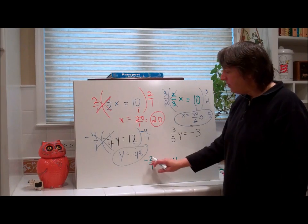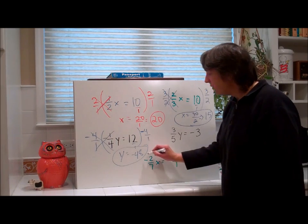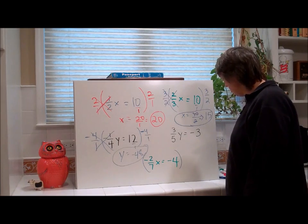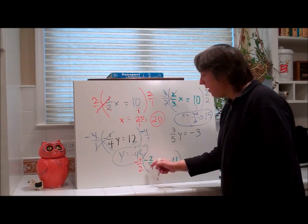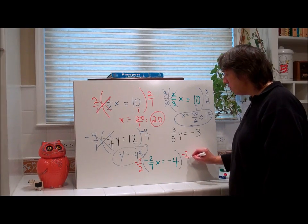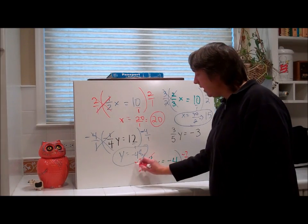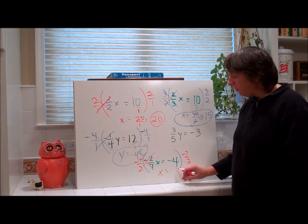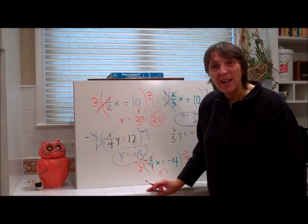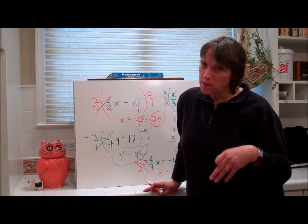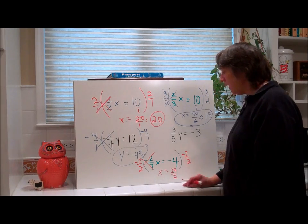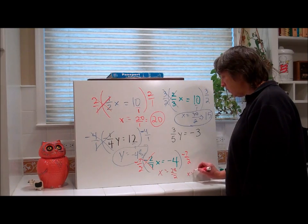Now we have negative 2 sevenths x equals negative 4. I'm going to multiply by the reciprocal, which is negative 7 halves. Because it's negative 2 sevenths, the reciprocal is negative 7 halves. These cancel to 1. And remember, this is over 1, so negative 4 times negative 7 — a negative times a negative is a positive — we get 28 over 2. What is 28 over 2? x equals 14.